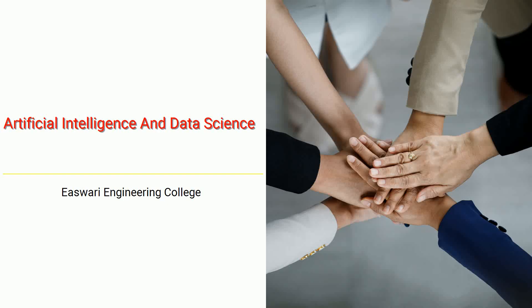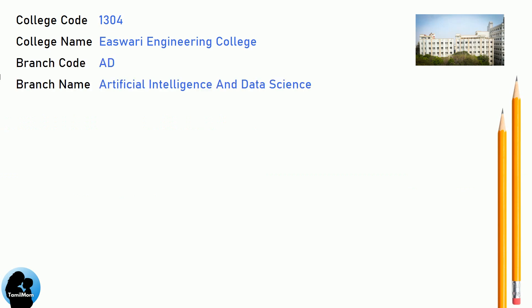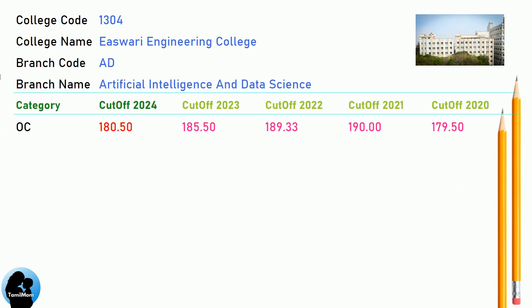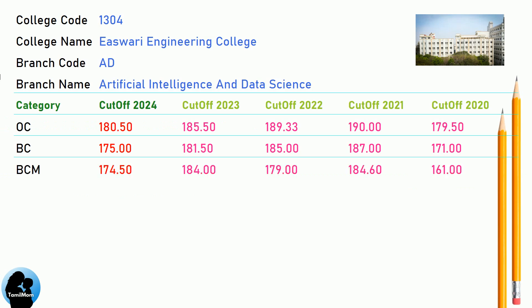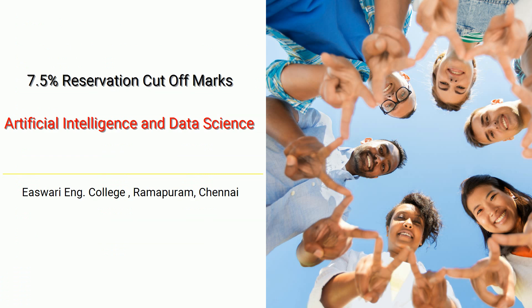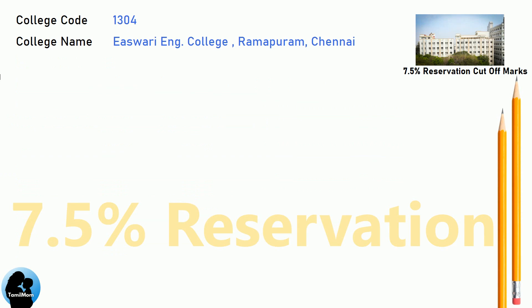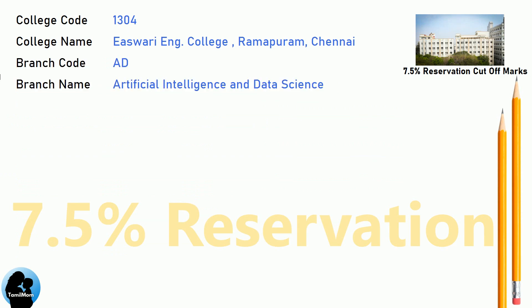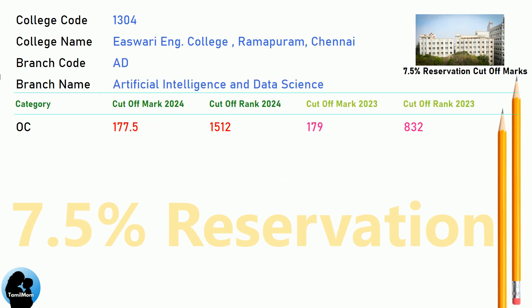DNA Cut-Off for Eshwari Engineering College in Artificial Intelligence and Data Science. DNA 7.5 Reservation Cut-Off for Eshwari Engineering College in Artificial Intelligence and Data Science.